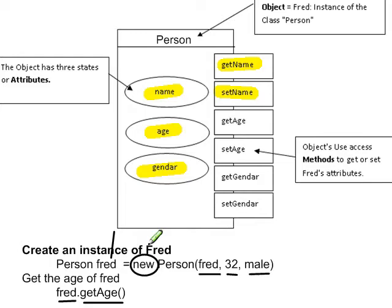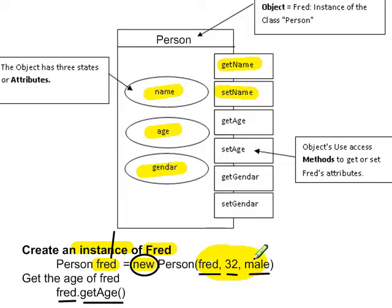When you create an instance of it — say for Fred — what you're doing is creating an object. Here we have new, so we're creating a new instance of the person class and we're going to call it Fred. The data we're sending to the class initially is to instantiate or set up the attributes: Fred, 32, and male. Once we set that up, we can access the Fred object and its methods — in this case the getAge method to find out and return Fred's age. You know it's a method because it has the brackets and the dot after the object.